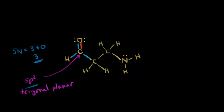Let's do the next carbon. I see only single bonds around that carbon, so it must be sp3 hybridized with tetrahedral geometry. Same thing for this carbon — only single bonds and only sigma bonds around it — so it's also sp3 hybridized with tetrahedral geometry.